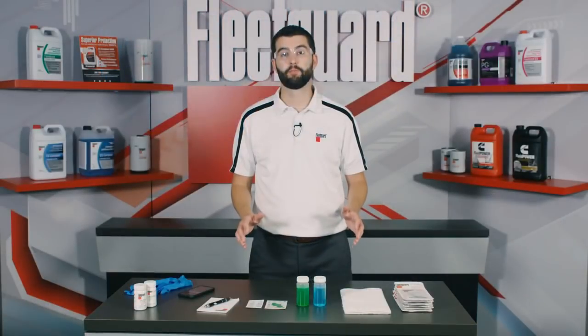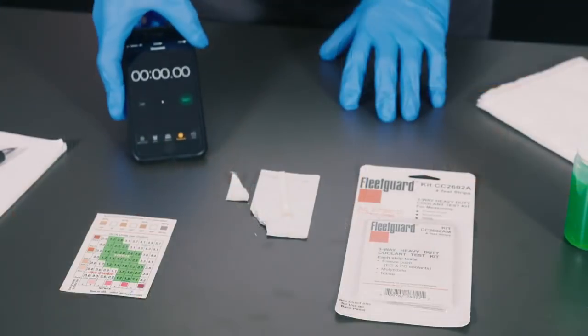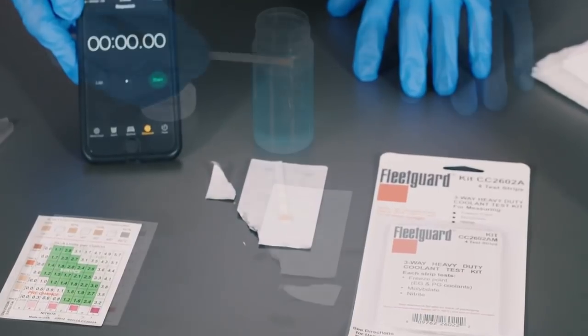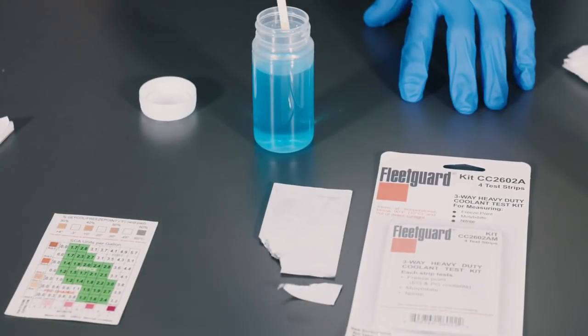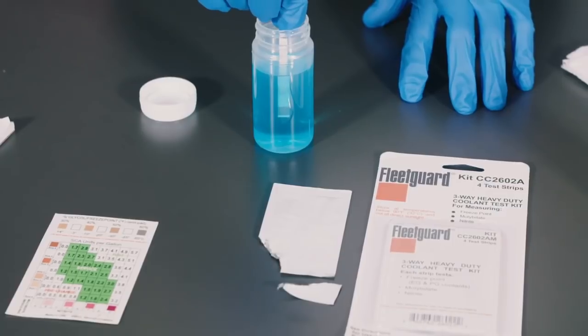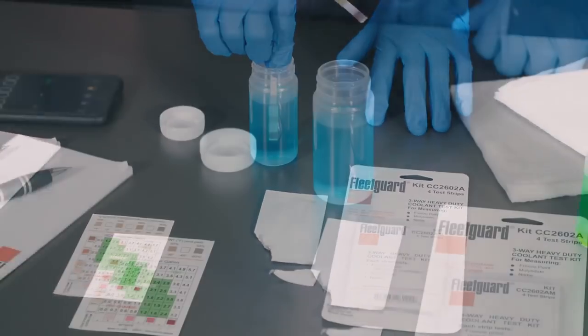Next make sure you have a smartphone timer or stopwatch close by and ready to start immediately after the testing begins. To begin the test take one test strip and submerge the end with the three chemical pads into the coolant for three seconds.